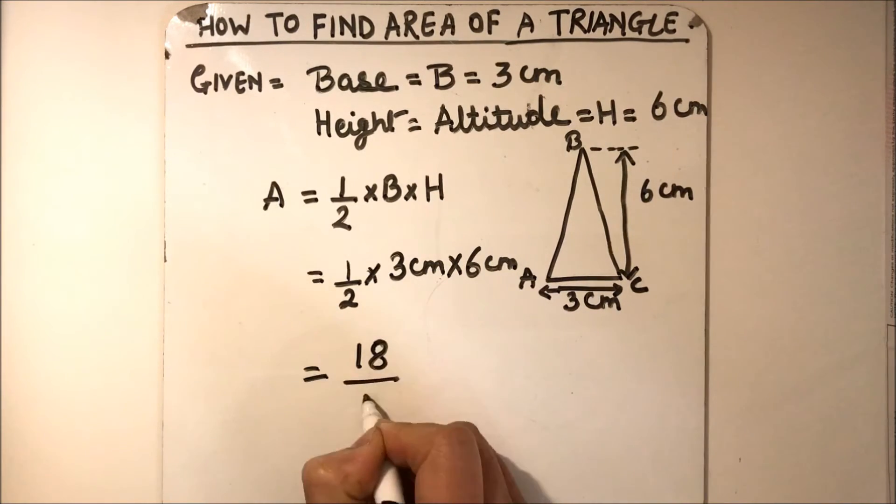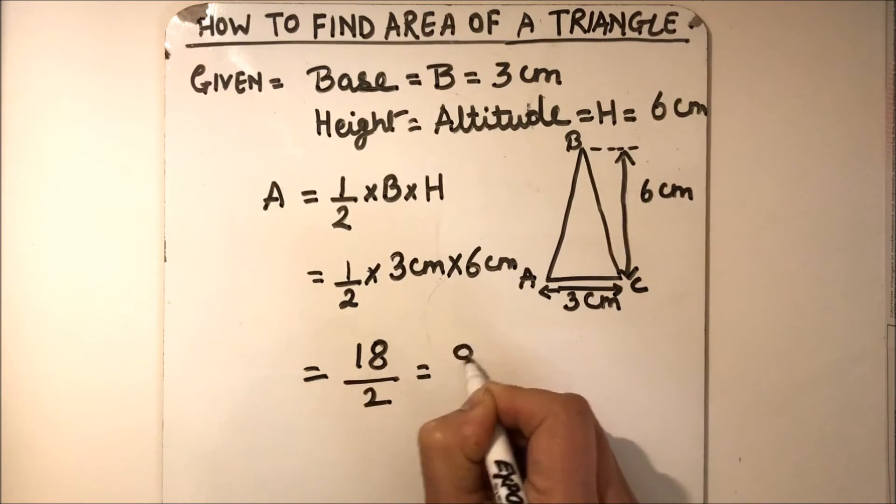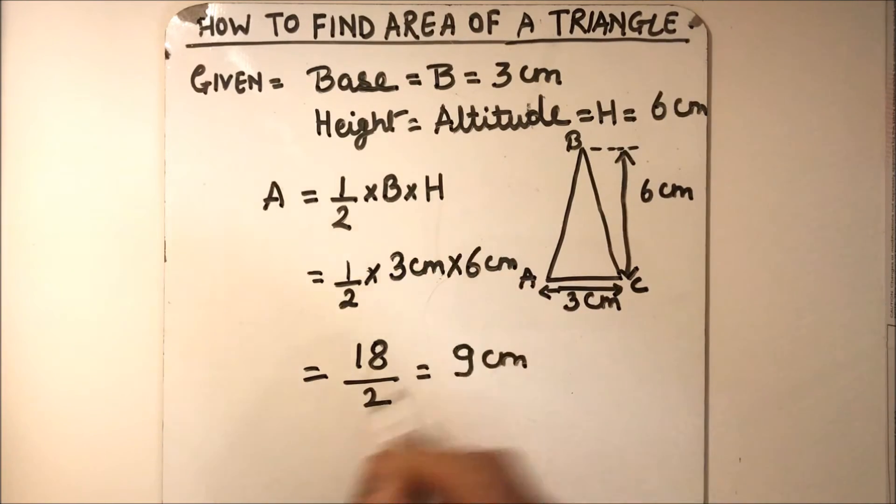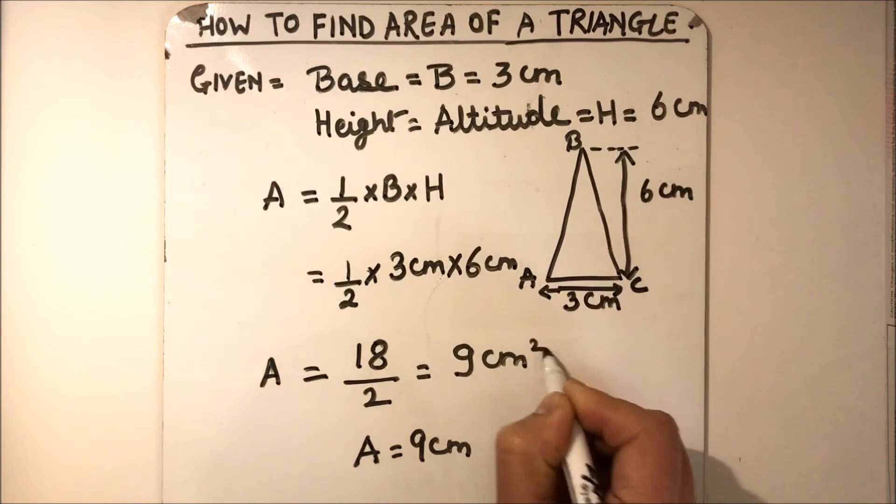So this is going to be 18 over 2 which is 9 centimeters. So area of triangle is 9 centimeter square.